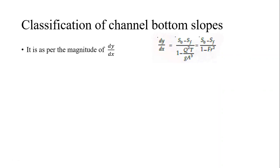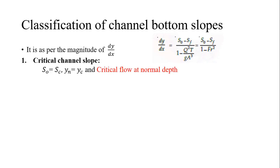The classification is based on the magnitude of dy/dx. The first type is the critical channel slope. For a critical channel slope, the bed slope is the critical slope, meaning normal flow depth equals critical flow depth — critical flow occurs at the normal flow depth.